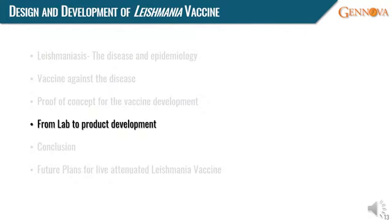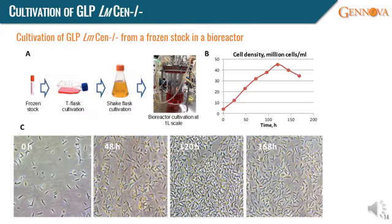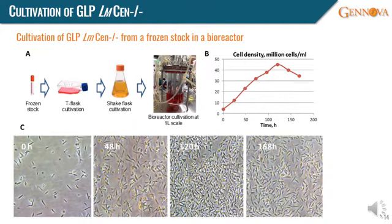We have moved from lab research to the product development phase. We have successfully grown the Leishmania Centrin knockout parasite in a bioreactor starting from a cell bank, where we can achieve a parasite density close to 50 million cells per ml. This was a long and arduous journey, but our industrial capability in cell culture and AI-driven manufacturing processes helped us overcome technical challenges and reach this very important milestone of large-scale cultivation of this knockout parasite.